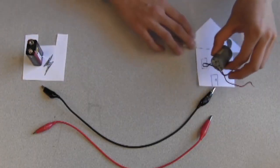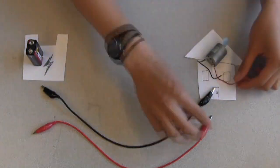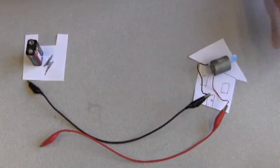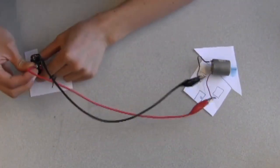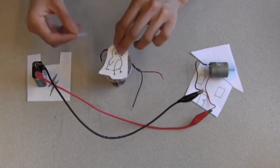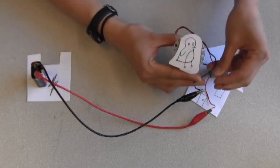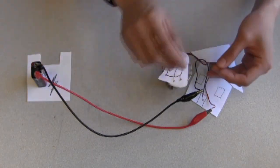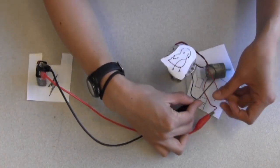Say our battery is the power plant and our motor is the house. We'll connect them with our high voltage power line and our low voltage power line. We'll use the light to represent our bird. The bird is safe when only touching one wire, but when it touches both...